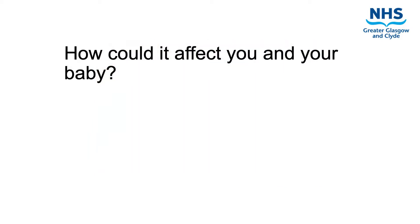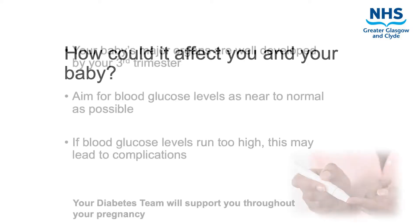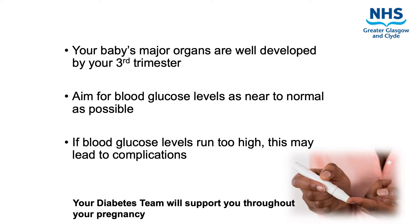How could it affect you and your baby? By your third trimester, around 28 weeks, your baby's major organs are well developed. It is still important however that you keep your blood glucose levels as near to normal as possible. The ideal levels you should be aiming for will be discussed with you by your diabetes team, who will support you throughout your pregnancy to optimise your control. If your blood glucose levels are left to run too high, too many calories will be delivered to your baby and this may lead to complications. These can be further discussed with your midwife or medical team when you attend your clinic appointments.